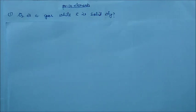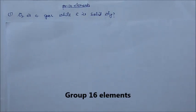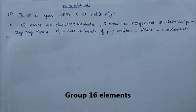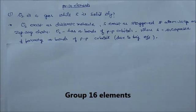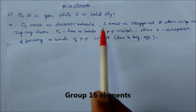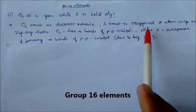Welcome students, so in this session we will see various questions on Group 16 elements. Oxygen is a gas while sulfur is a solid. Why? Because oxygen exists as a diatomic molecule, while sulfur exists as staggered eight-atom rings in zigzag chains.